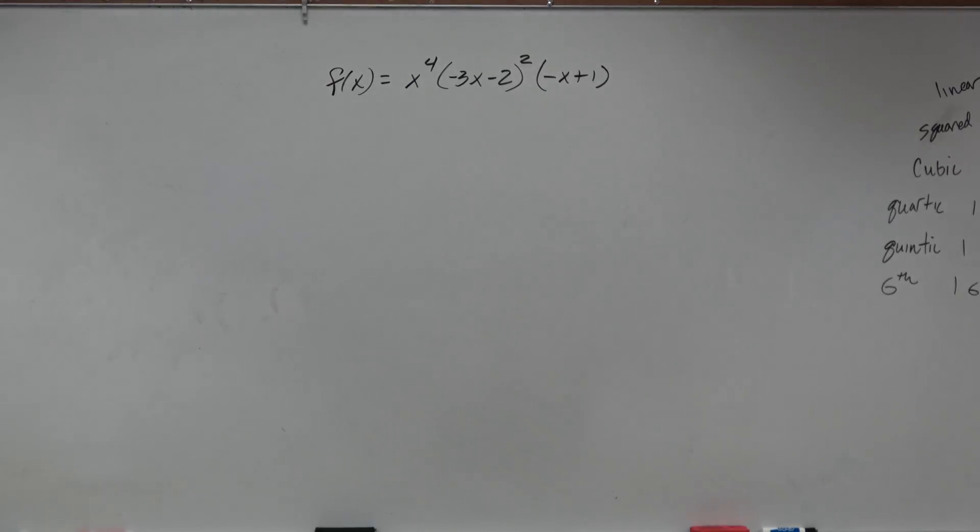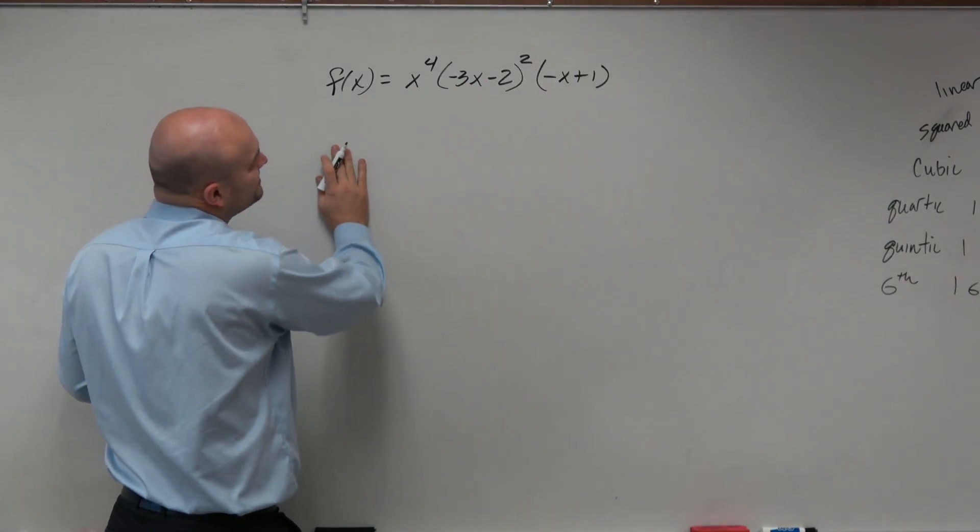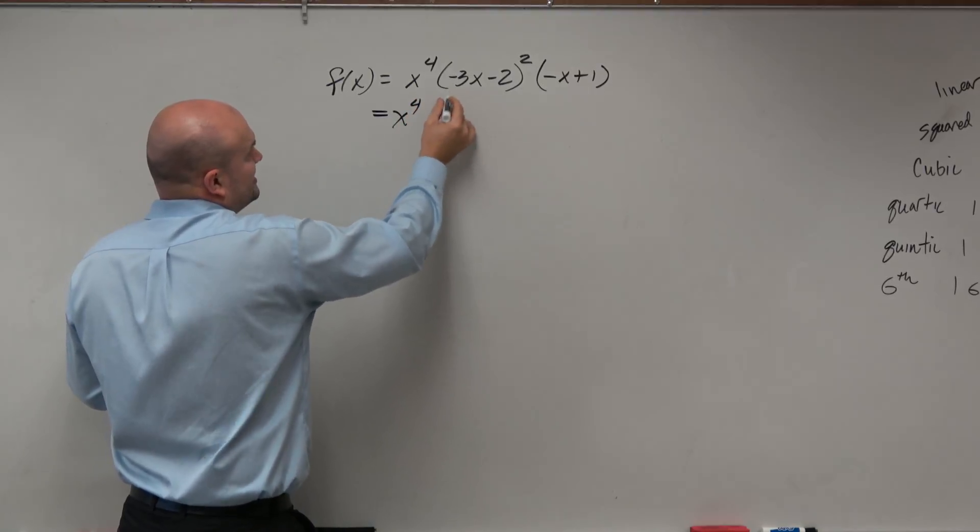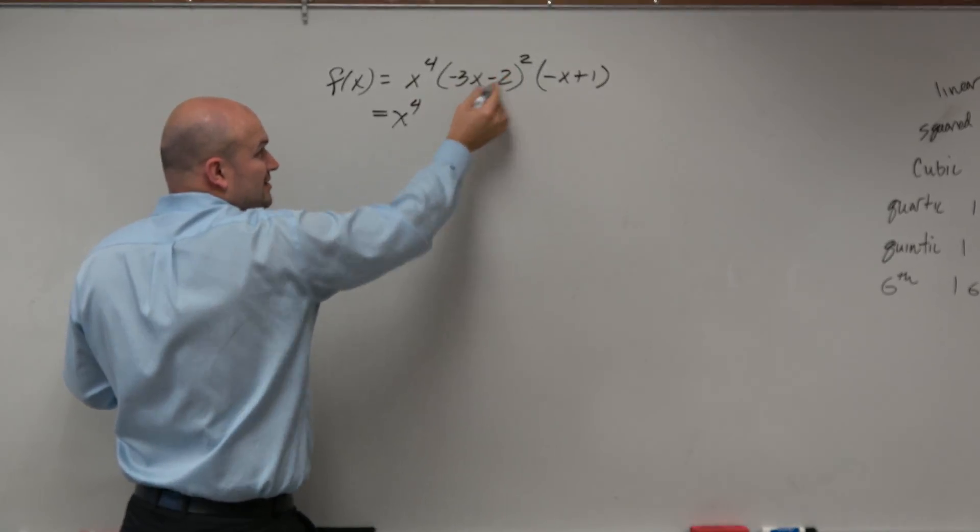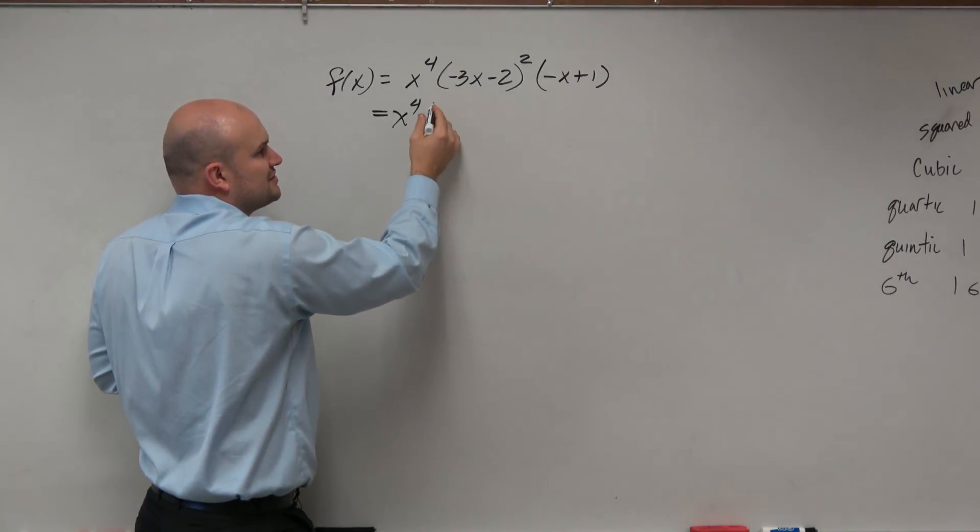So the first thing we want to look at is if I was going to expand this out. I probably should have given you guys actually even a harder one, but this is negative 3x squared, right? In reality, you guys could have done this in your head. But I should have actually given you guys a harder one.